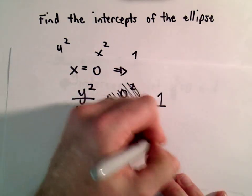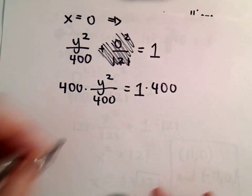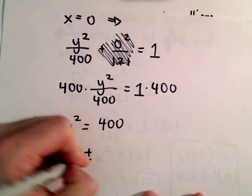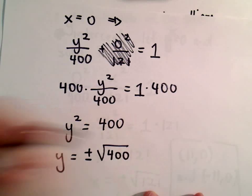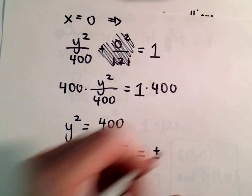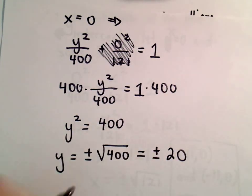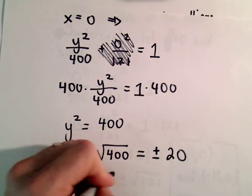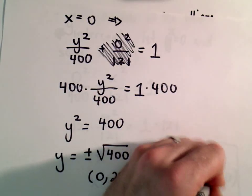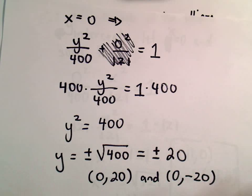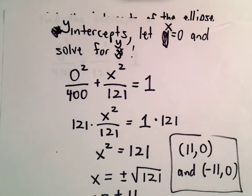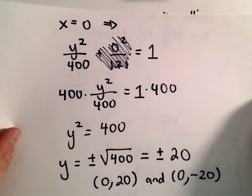Multiply both sides by 400 — that gives us y squared equals 400. Take the square root of both sides, including positive and negative, and the square root of 400 is 20. So the y-intercepts will be at (0, 20) and (0, −20). Using the fact that this ellipse is centered at the origin along with the x and y intercepts, you could already make a pretty decent rough sketch of your ellipse.